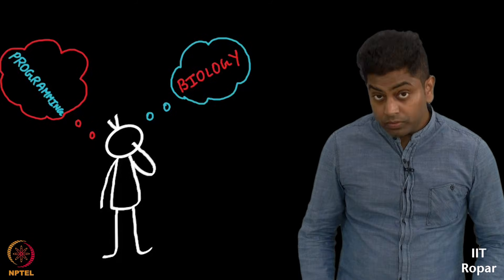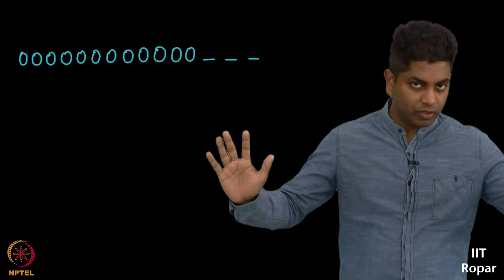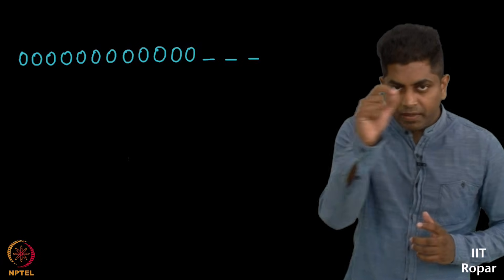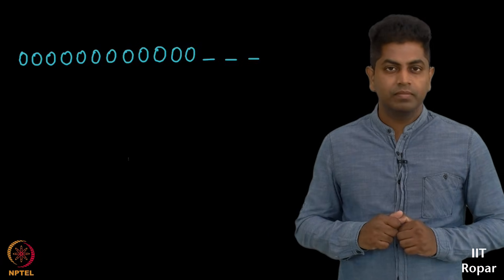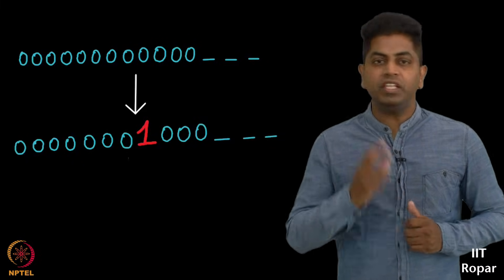So what we will do is we will take a huge binary string. Let's say some twenty digit binary string. All of them are zeros. The rule is simple. You pick some digit randomly and make zero a one with a small probability.